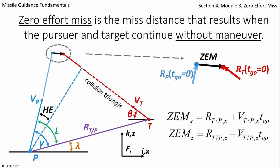Mathematically, we can represent zero effort miss in terms of its x and z components. The subscript x denotes the component along the i direction, and t with respect to p is target with respect to pursuer.